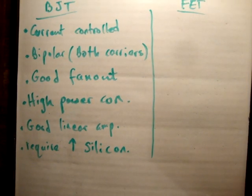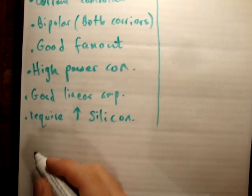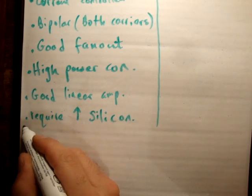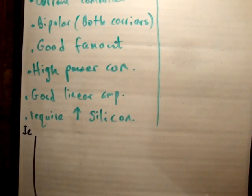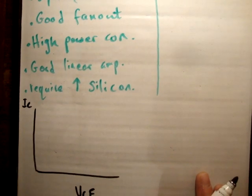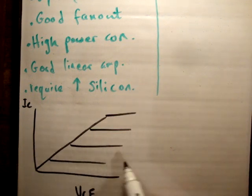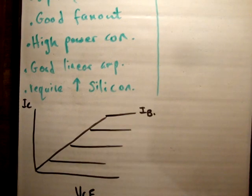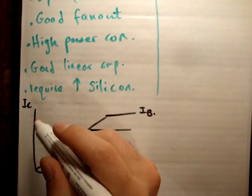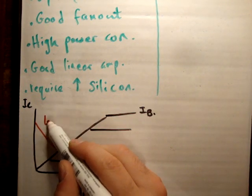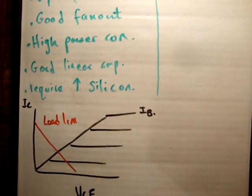Just to draw the load line and the current diagrams. If we have up here the current on the collector, on the bottom we have the voltage across the collector and the emitter. And if we draw all our different currents on the base, we have a thing called the load line. The load line looks something like this.